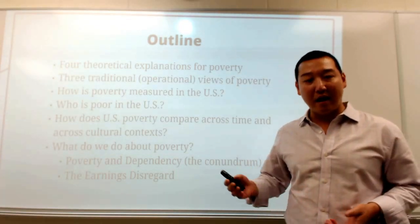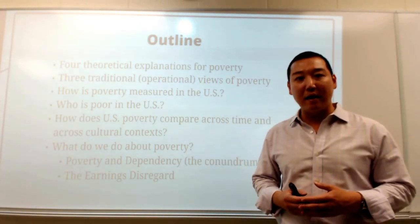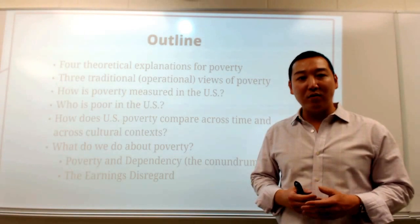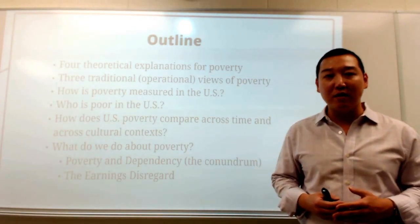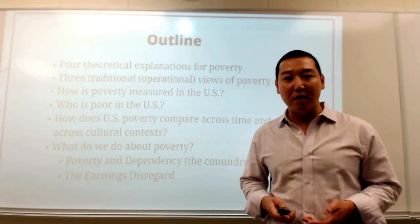We've noted this conundrum between poverty, namely the lack of security, and work. There might be a trade-off between the two. And so we take a look at a historical example of a tool that's been used by the government in addressing both poverty and the work effort simultaneously. And that's in the way of the earnings disregard.